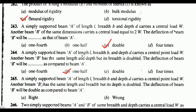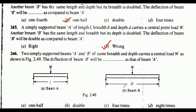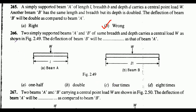A simply supported beam A of length l, breadth b, and depth d carries a central point load w. Another beam B has the same length and breadth but its depth is doubled — the deflection of beam B will be double as compared to beam A. Options: right or wrong. The correct answer is option B: wrong. Question 266: Two simply supported beams A and B of the same breadth and depth carry a central load w — the deflection of beam B will be option D: eight times that of beam A.